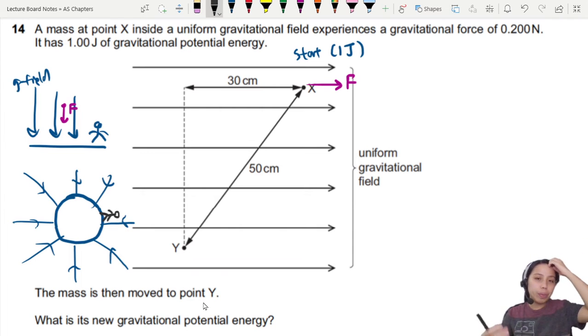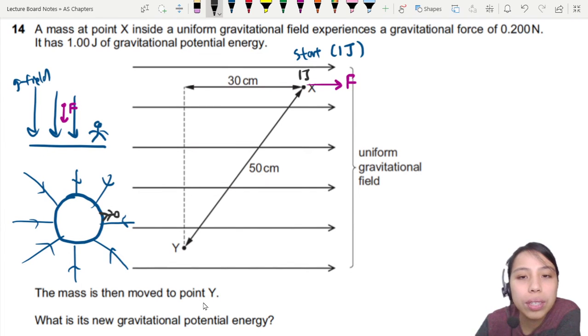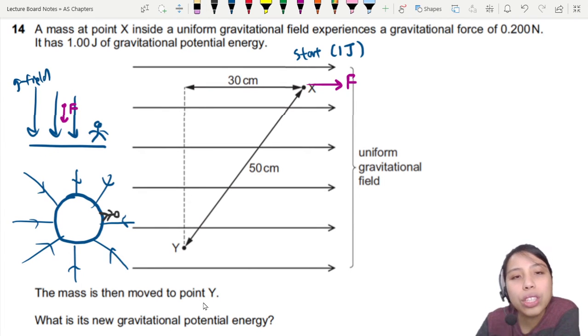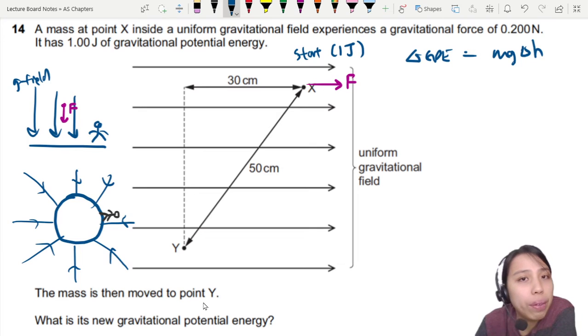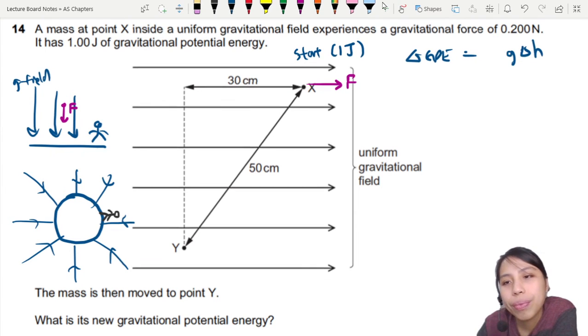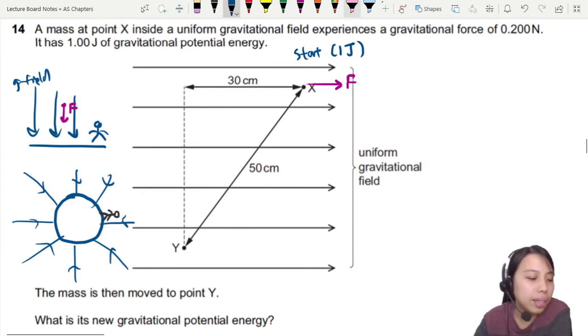We want to find the new GPE. Let's find the change because we already know we are at 1 joule at this position here. The change in energy, you might think, can we use the change in GPE? Can we use MG delta H? Normally, yes, but we don't have enough information. Because what is the M? You have to do some extra calculations, right? To do 0.2 and G, that could work too. But let's try thinking of another method.